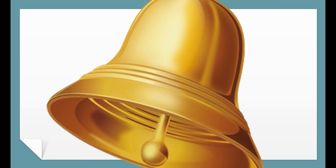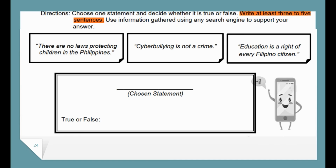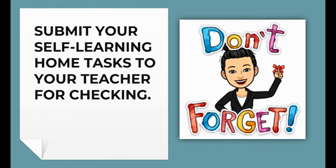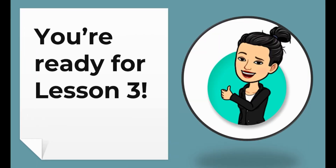Enrichment activities: choose one statement and decide whether it's true or false. Write at least three to five sentences using information gathered from any search engine to support your answer. Good luck. Submit your self-learning home task to your teacher for checking. Now you're all set for lesson three. Until next time, this is your teacher advisor Ms. Robbie — happy studying, guys!